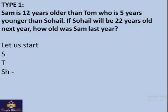The easiest way is to write the initials of the names: S for Sam, T for Tom, and Sh for Sohail. We start with Sohail because his age can be found out directly — he will be 22 next year, so this year he is 21. Tom is 5 years younger than Sohail, so we take away 5 and get 16. Tom's age is 16.